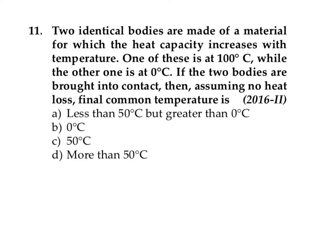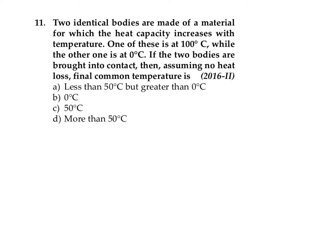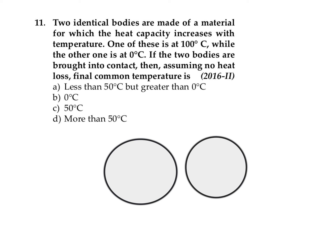This question states that two identical bodies are made of a material for which heat capacity increases with temperature. One body is at 100°C while the other is at 0°C. Assuming no heat losses, we need to find the final common temperature. Let's say we have two objects: the first at 100°C and the second at 0°C.